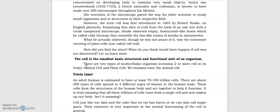So we have here, the cell is the smallest basic structural and functional unit of an organism. There are two types of multicellular organisms: we have the animal cell and plant cell. By the way, when you see multicellular, it contains two or more cells in its body. So we humans are an example of the animal cell.